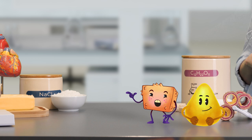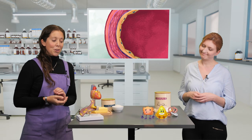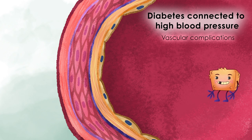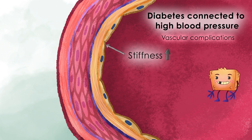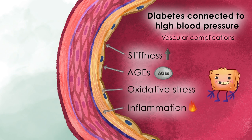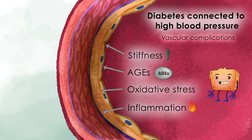Diabetes is also connected to high blood pressure, though the mechanisms are not yet completely understood. We know that high blood glucose levels can cause damage to the inner lining of the vessels and increased stiffness. Chronic hyperglycemia and insulin resistance play an important role in the initiation of vascular complications of diabetes. This involves mechanisms including the increased formation of advanced glycation end products, as well as oxidative stress and inflammation initiated by diabetes, which damages the vessels and thereby increases blood pressure.